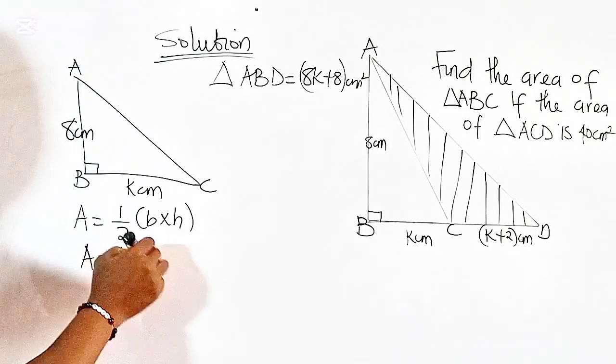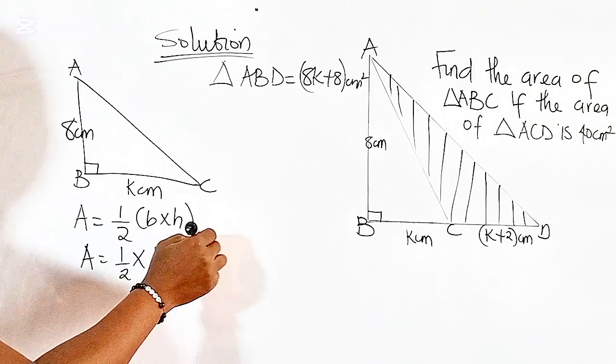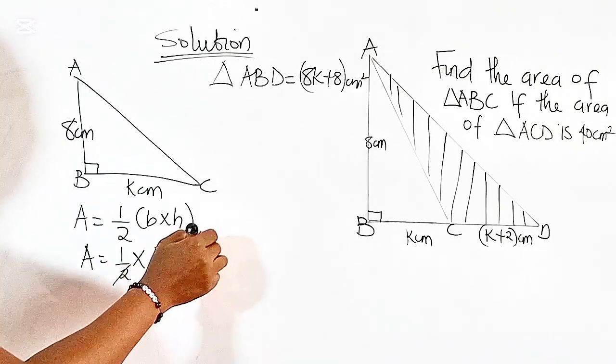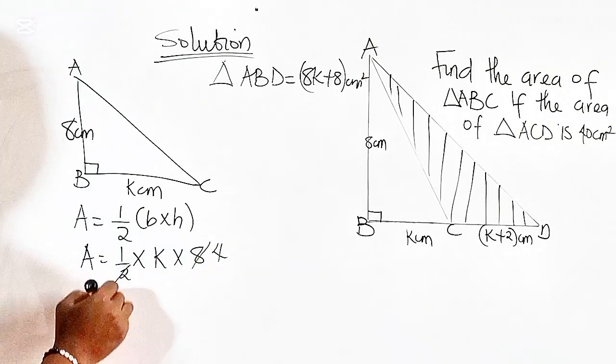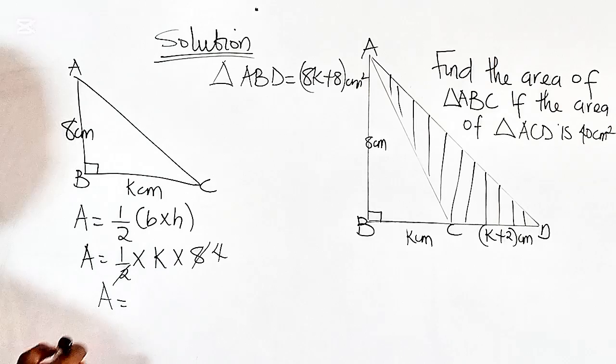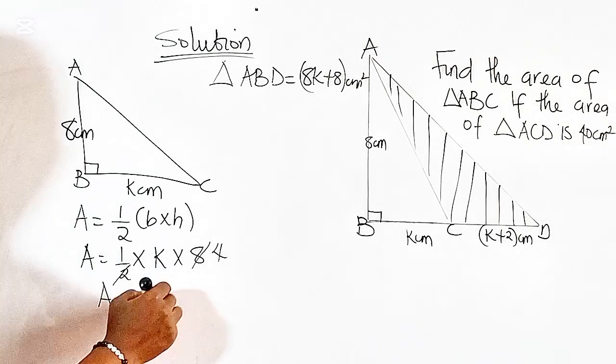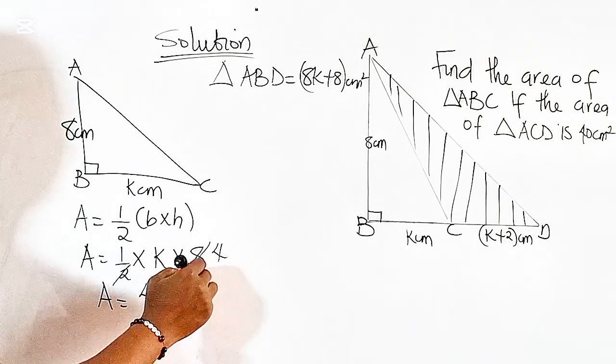So we have the area equal to 1 over 2 times the base, which is K, times the height, which is 8. 2 into 8, 4 times. So we have the area of triangle ABC to be 4K cm squared.